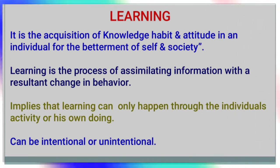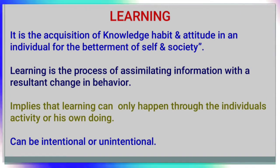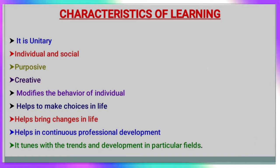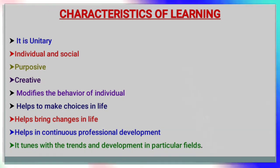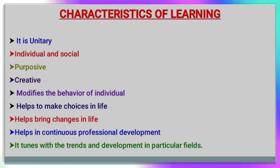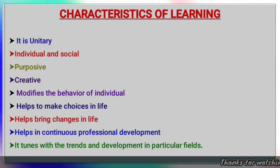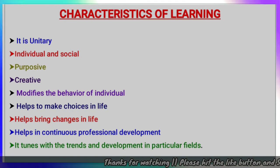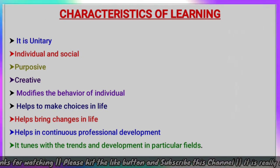The net result of learning is a change in individual behavior. Characteristics of learning: it is unitary, individual and social, always purposive, and must be creative. It modifies the behavior of the individual, helps to make choices in life, brings changes in life, helps in continuous professional development, and tunes with the trends and developments in a particular field.